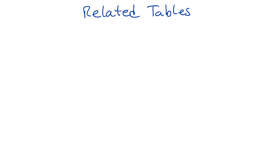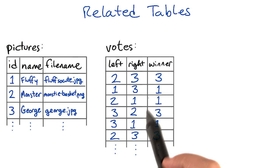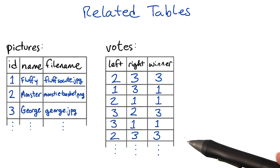A database will usually have several tables in it. Here's how we might start for our image voting app. The first table represents pictures people have uploaded of animals. The second represents people's votes.